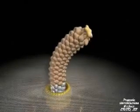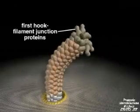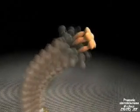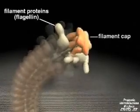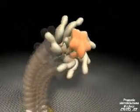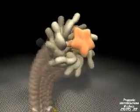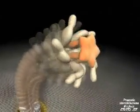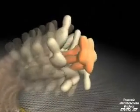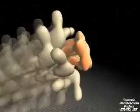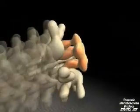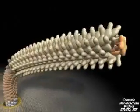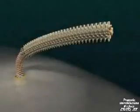After the hook is assembled, the hook cap dissociates, and a series of junction proteins assemble between the hook and future filaments. Finally, yet another cap is built, and filament proteins assemble. Like the rod and hook proteins, they travel through the hollow channel inside the filament to reach the distal end. The cap rotates, which causes the subunits to build in a helical fashion. A complete filament can consist of 20,000 to 30,000 subunits.